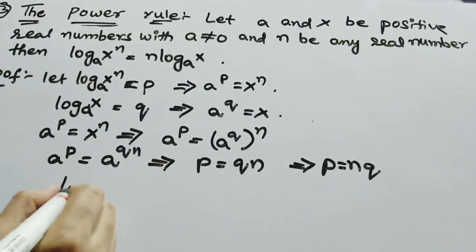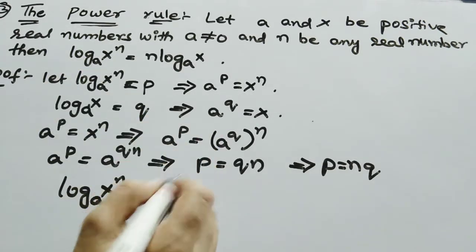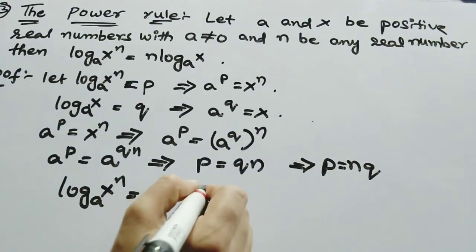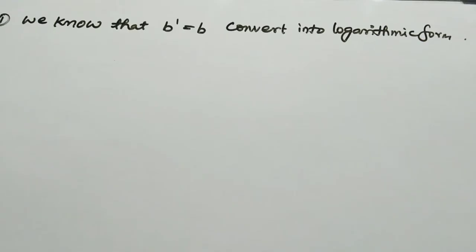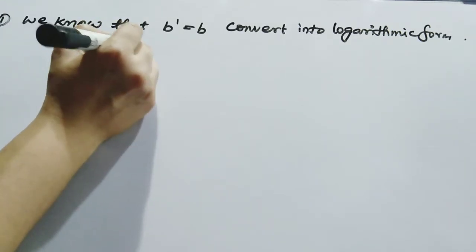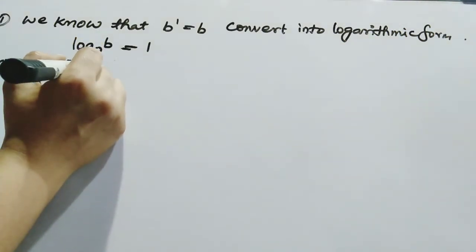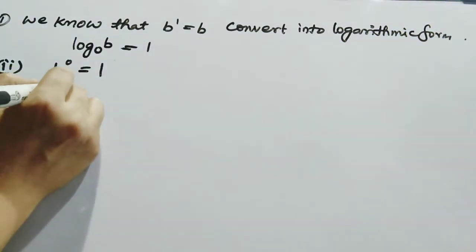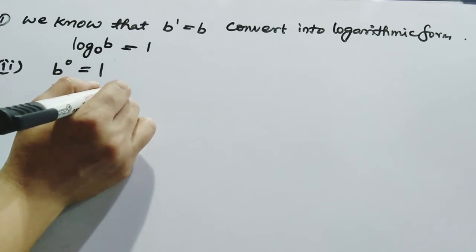What is p? log(x^n) base a equals n times q, and what is q? q is log x base a. Hence we prove it. Some important results to remember: since b^1 equals b, we get log b base b equals 1. And since b^0 equals 1, log 1 base b equals 0.